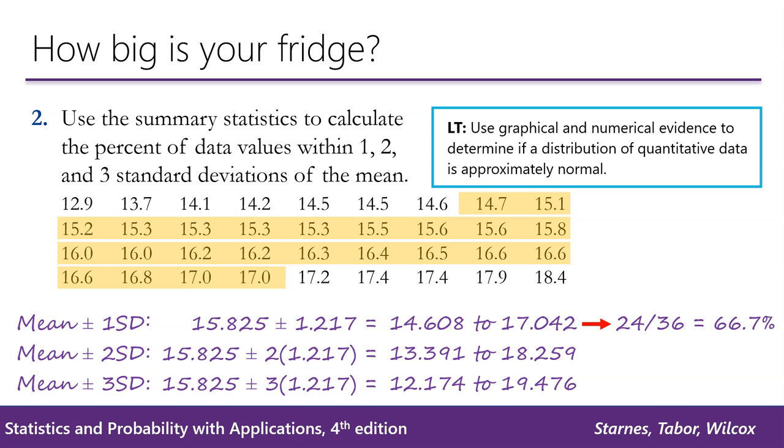This is really quite close to 68 percent, which we would expect from the empirical rule. We repeat this for 2 standard deviations and 3 standard deviations, and we see that the numbers are very close to 68, 95, and 99.7.